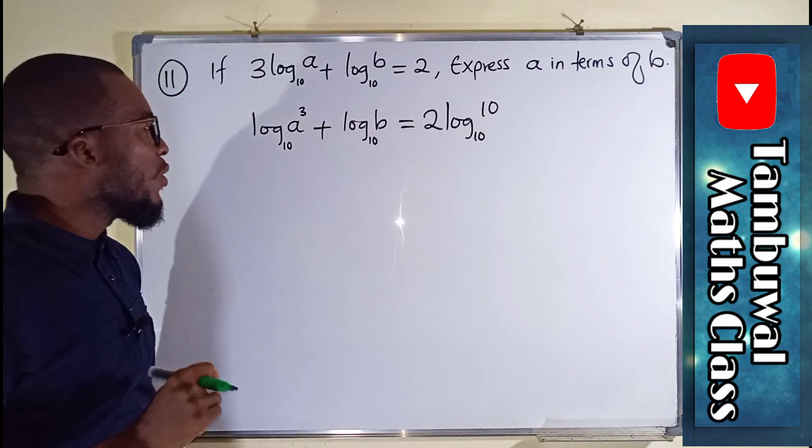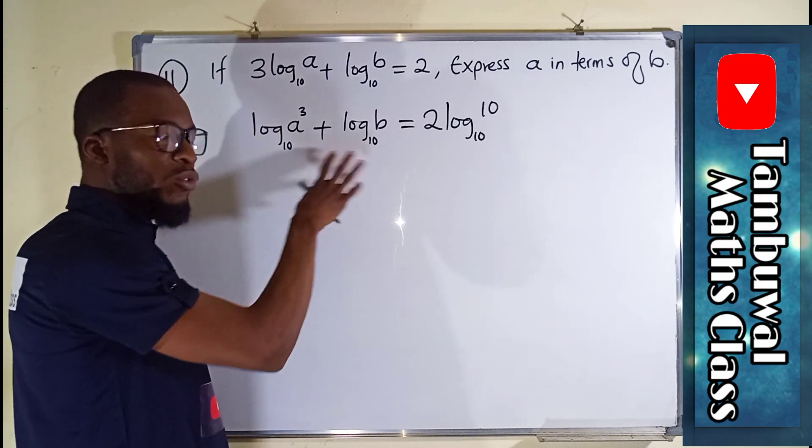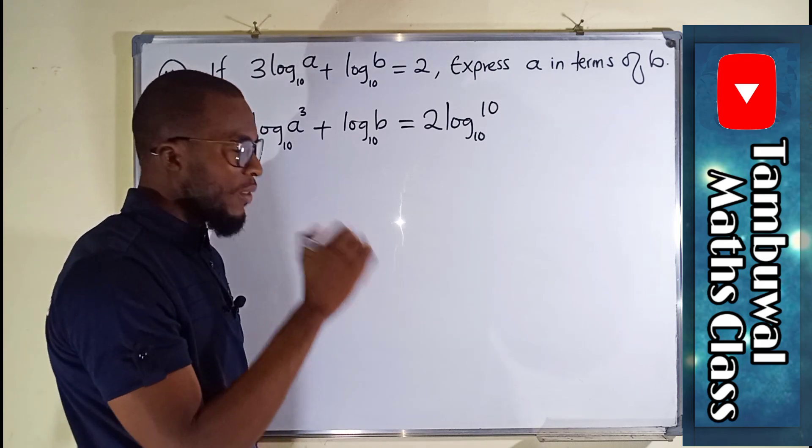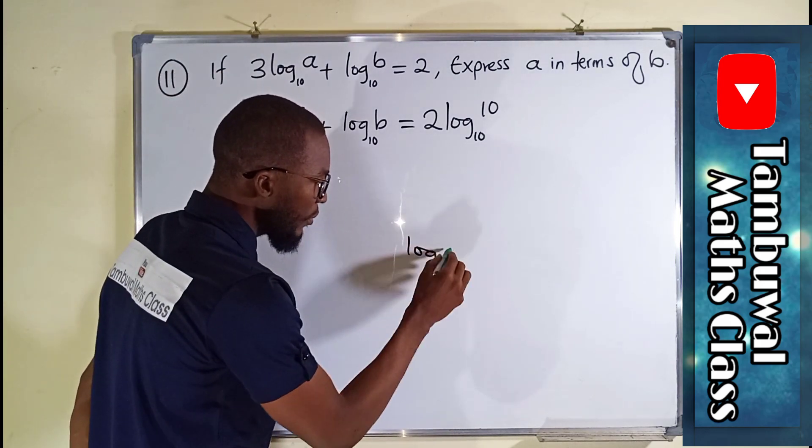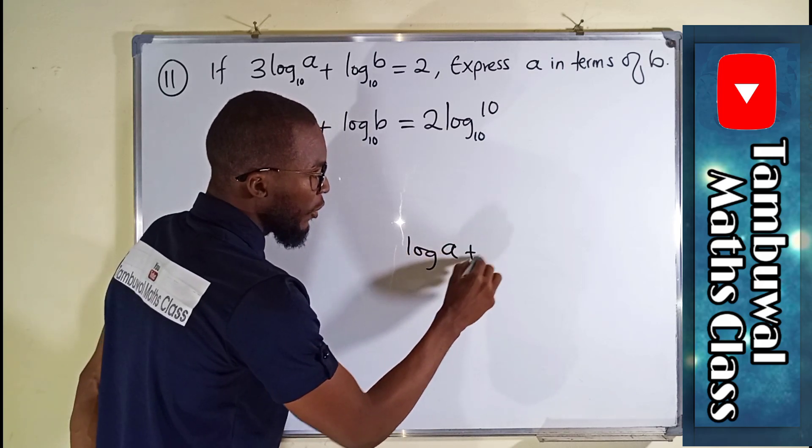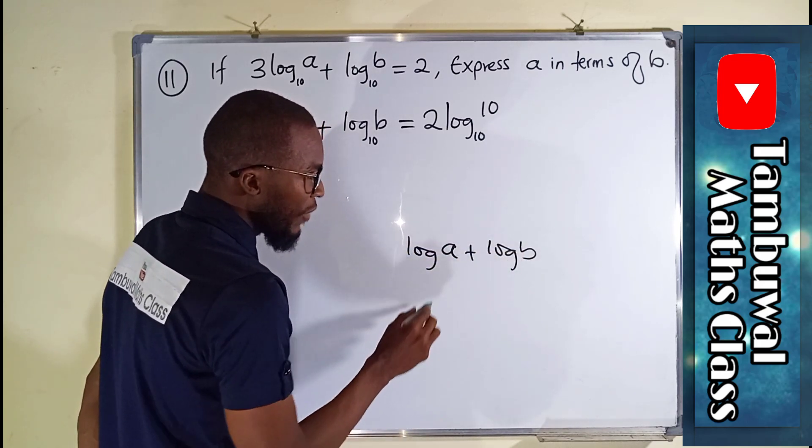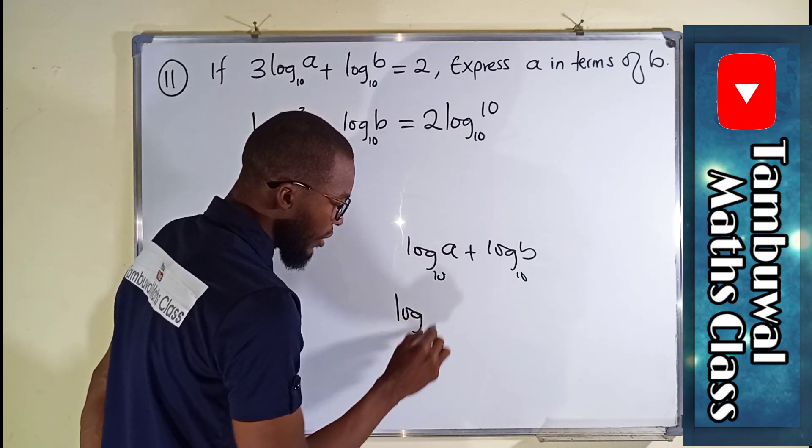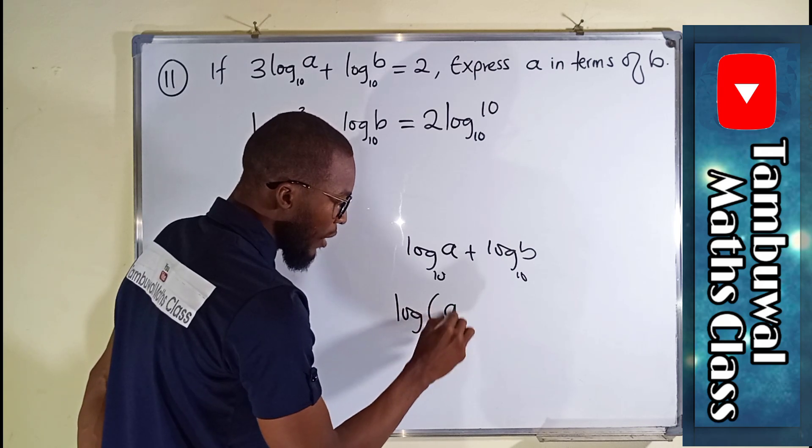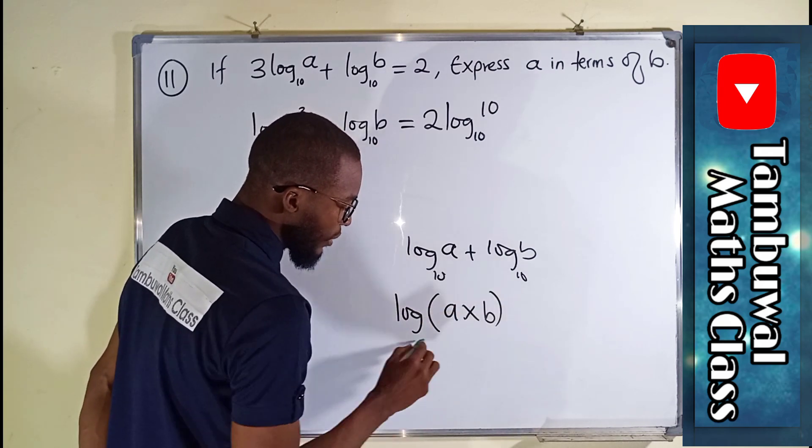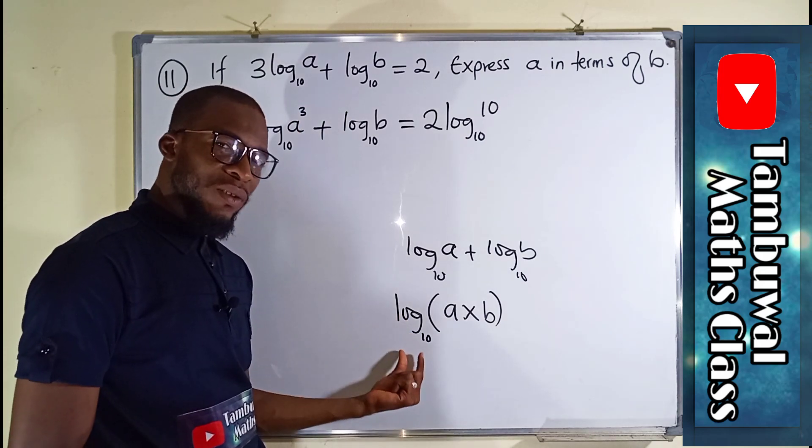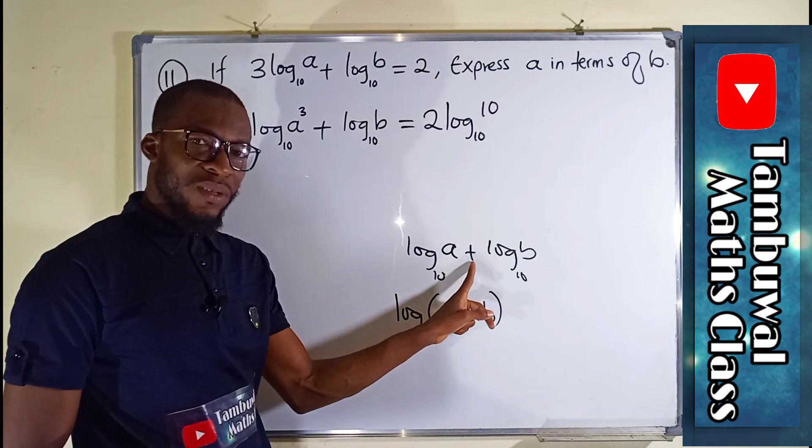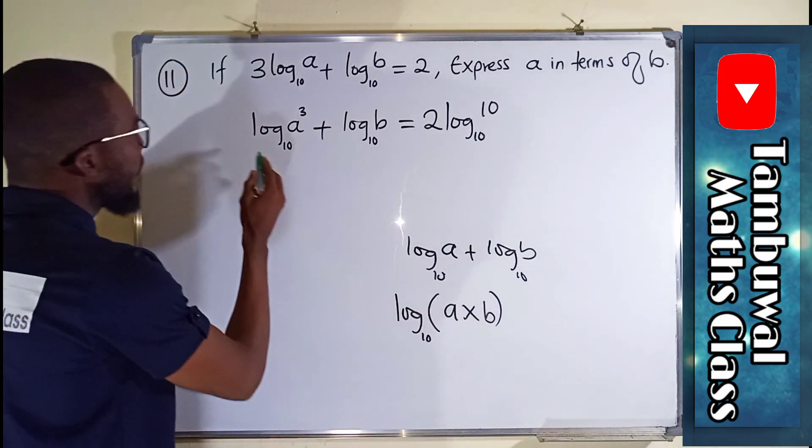Let us apply another law of logarithm that says if you have addition in between two logs, you are free to take one log and multiply the numbers together. This is what I mean. If you have log A plus log B, you are free to say log of A multiplied by B. You can assign them a single log and multiply them if the relationship between them is addition. So we can equally do the same here.